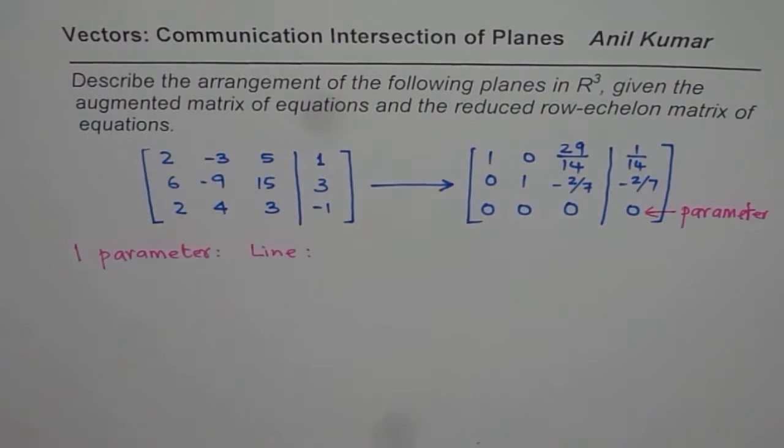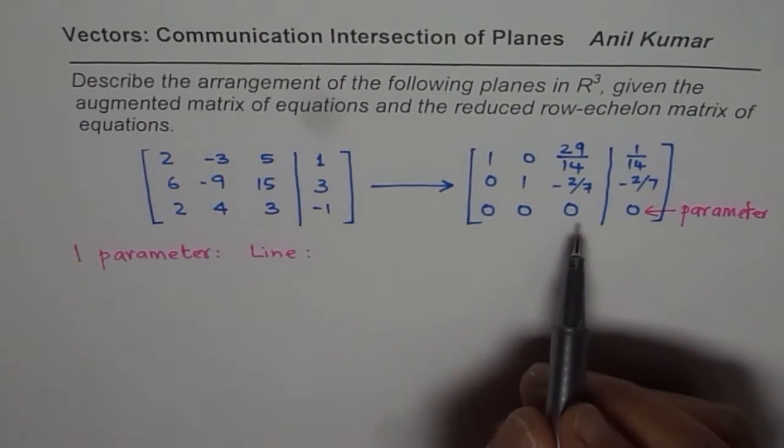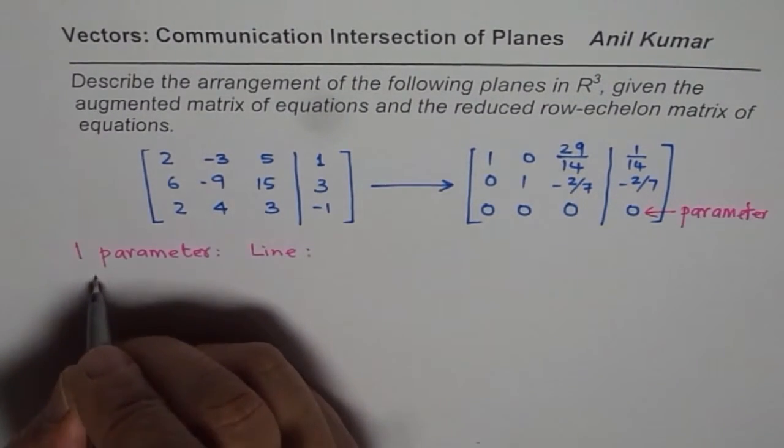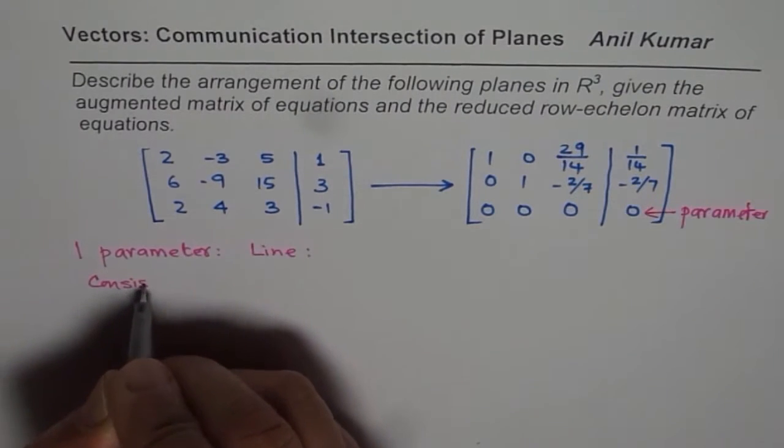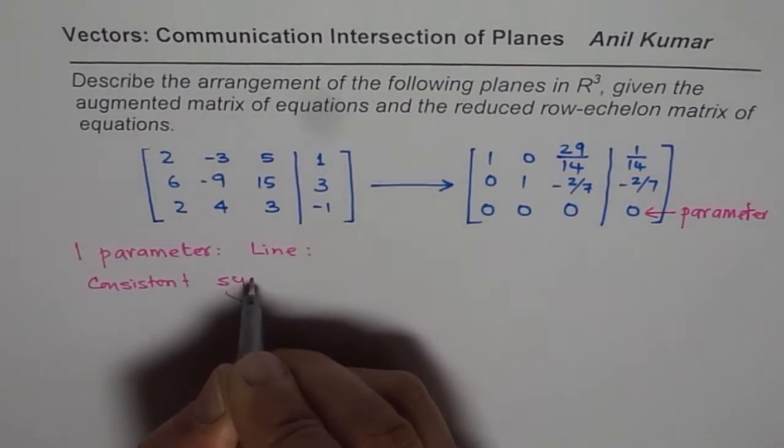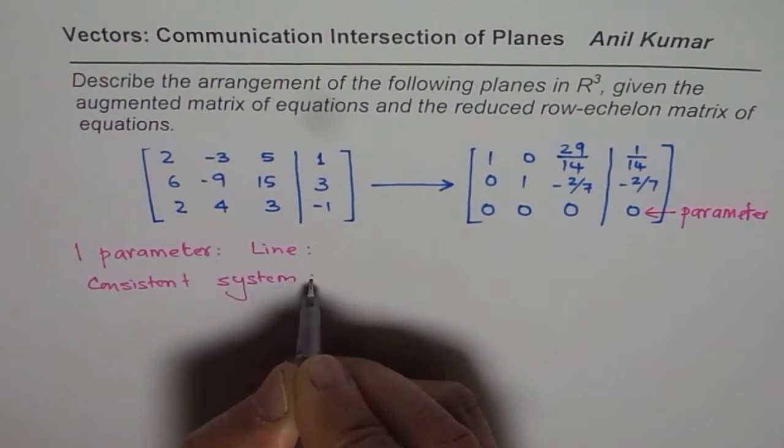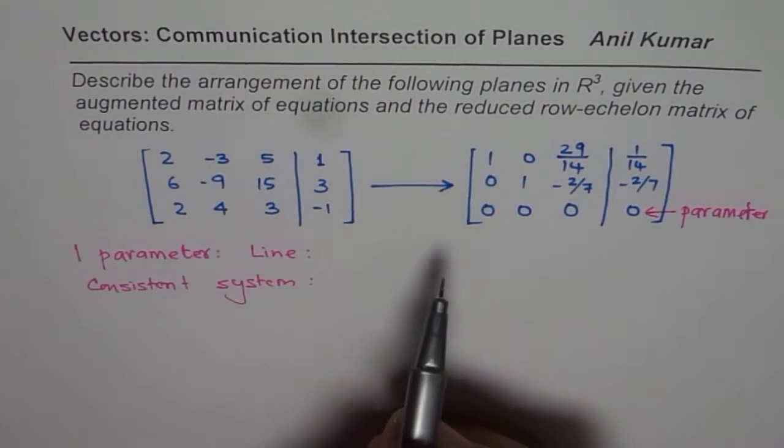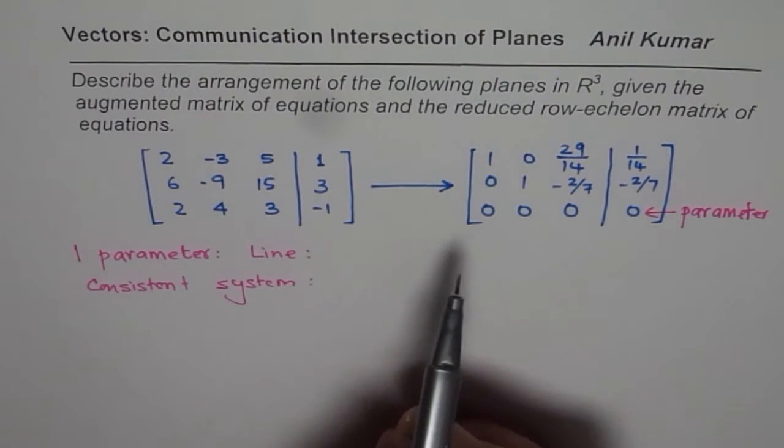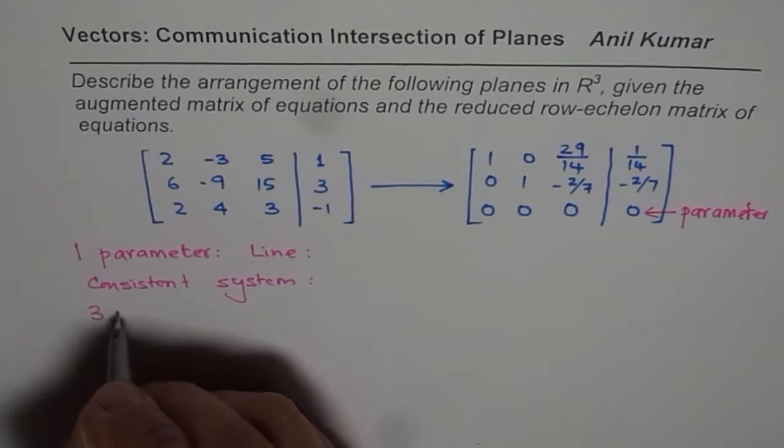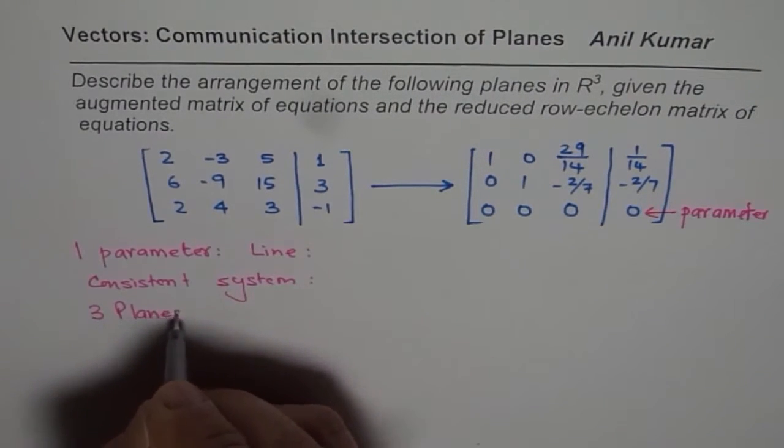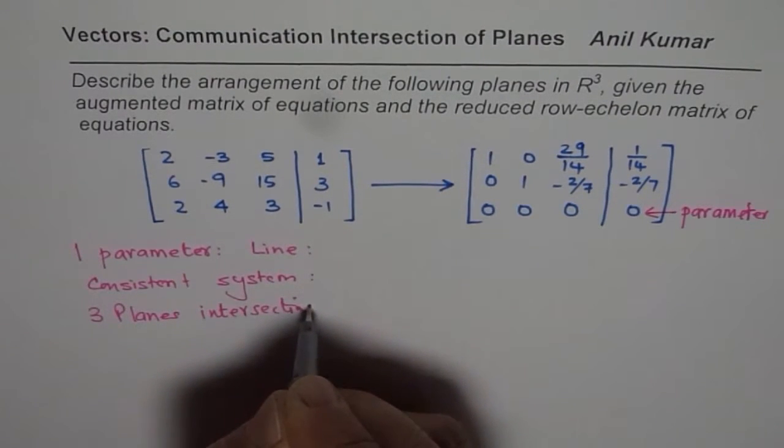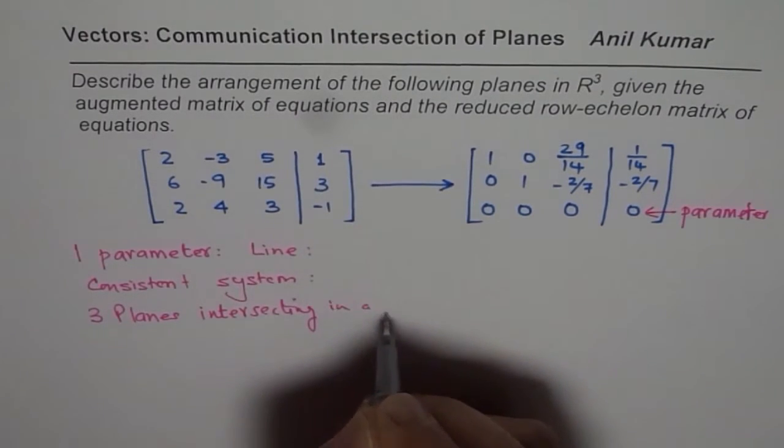In this particular case, the system is consistent. So we have a consistent system. That is to say that all the three planes are intersecting at a line. So we have three planes intersecting in a line.